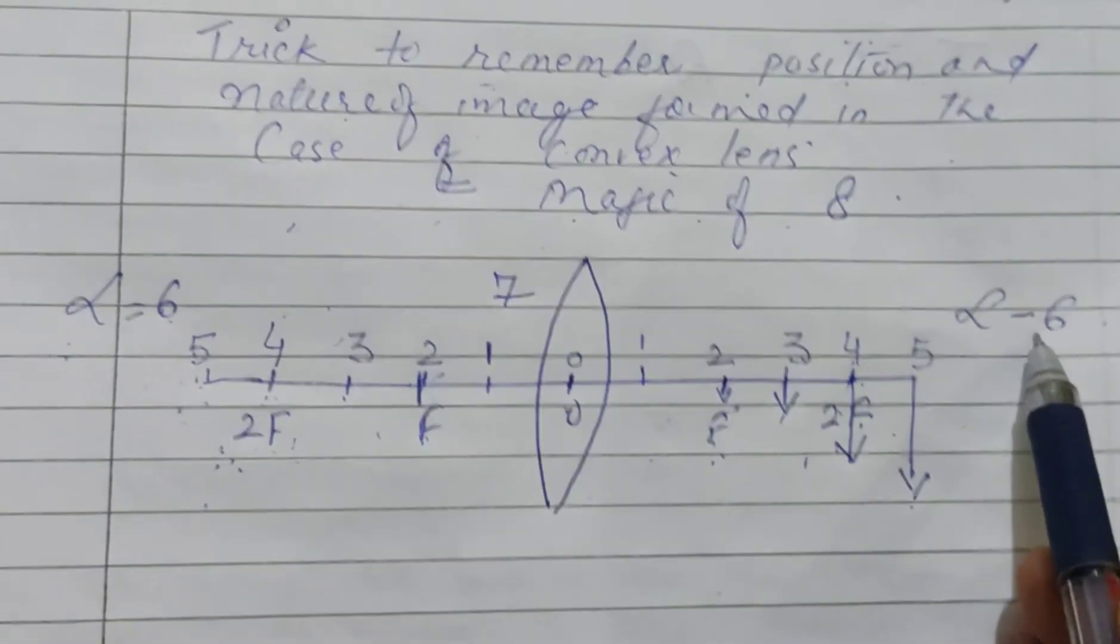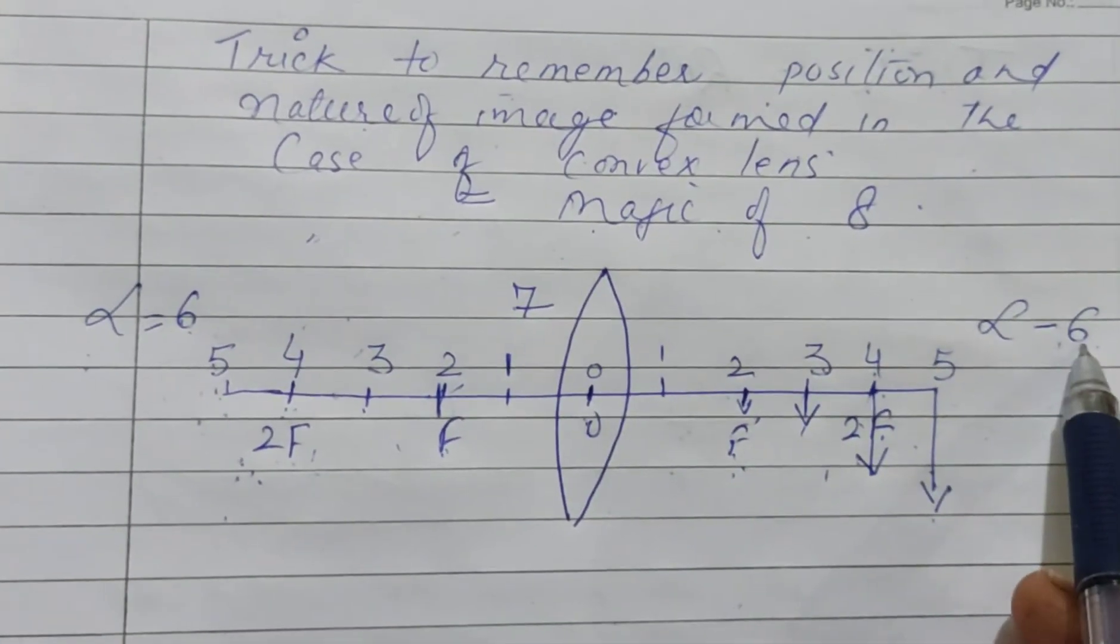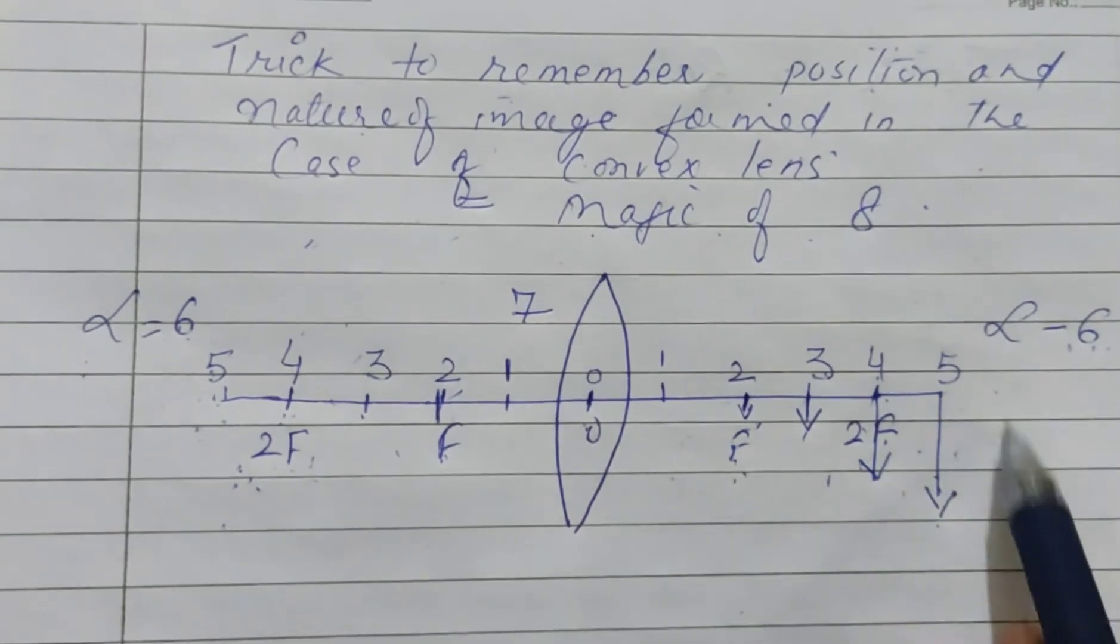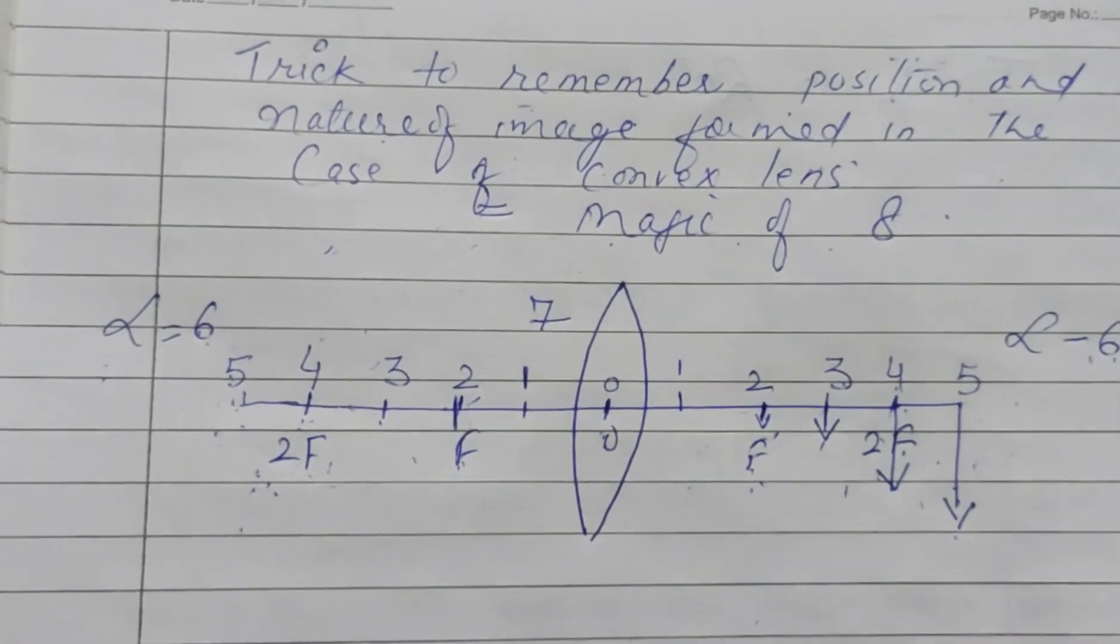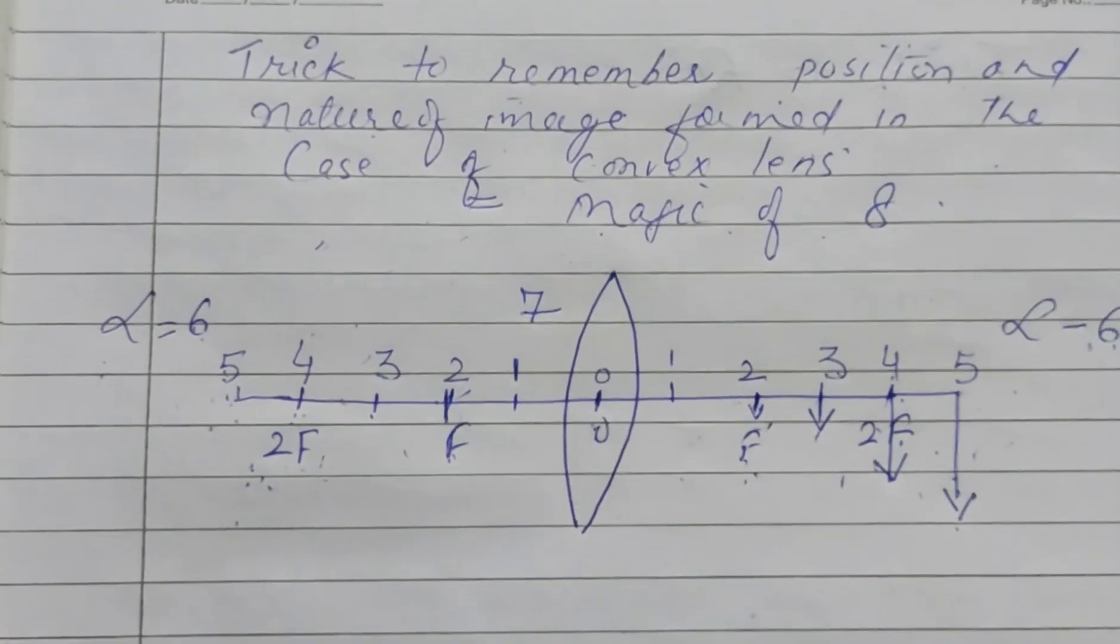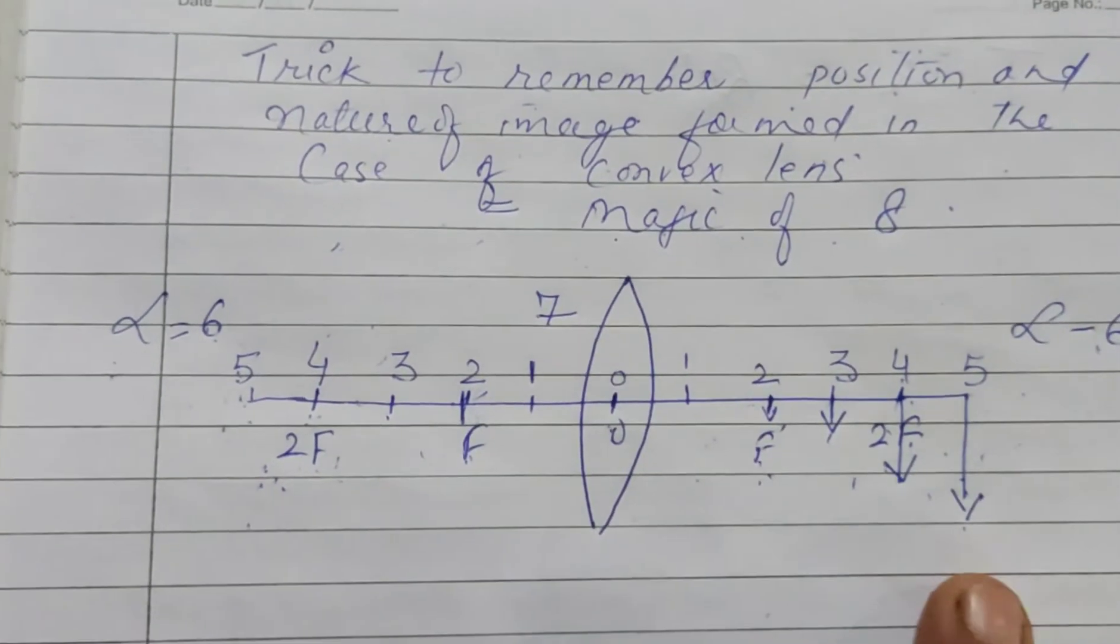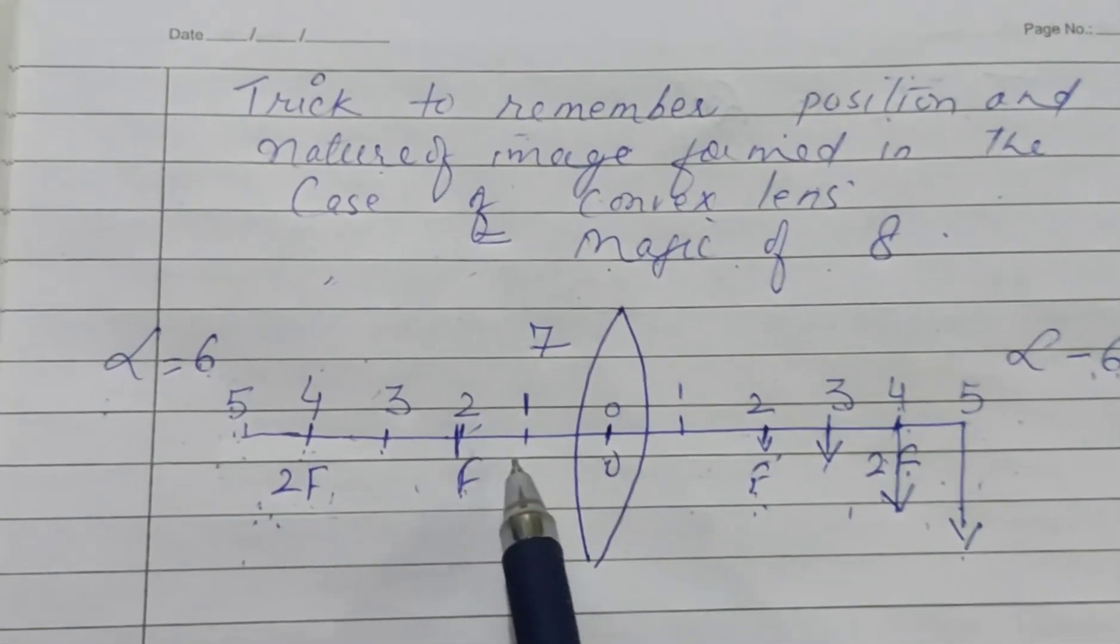So here the image will be formed at infinity, which will be highly magnified, real, and inverted type.